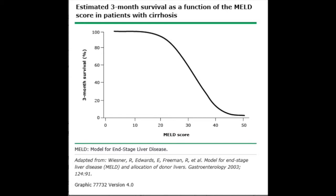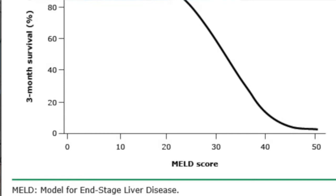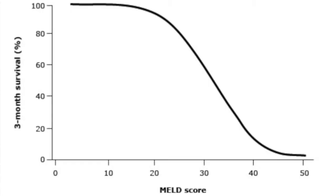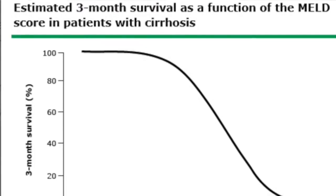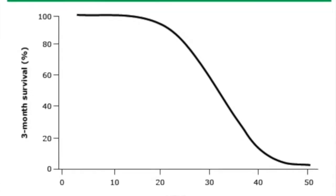The MELD score can be calculated between roughly six and 40. I have a table here that shows you, as the MELD score increases, the survival goes down. You could see here that at one extreme, if the MELD score is 40, their three-month survival is going to be less than 20%. That is quite poor. But if somebody's MELD score is about 15, their three-month survival is nearly 100%. These people are going to do very well. As the MELD score increases from 20 to 30 to 40, the survival goes down.